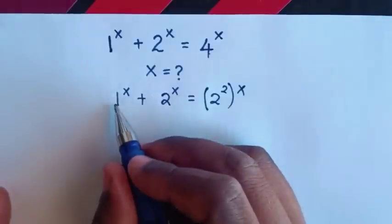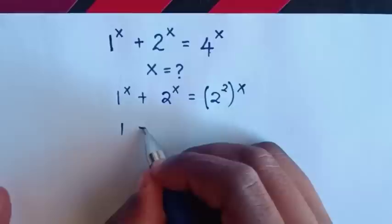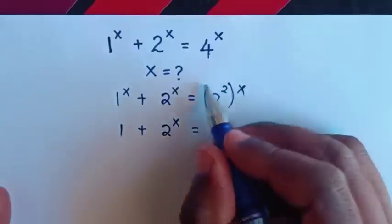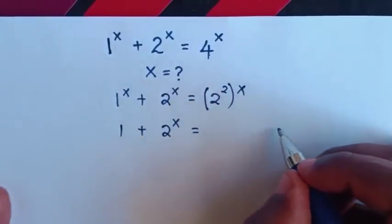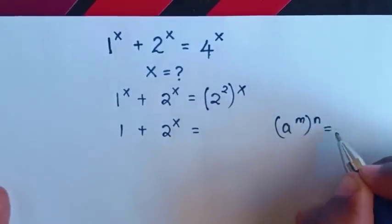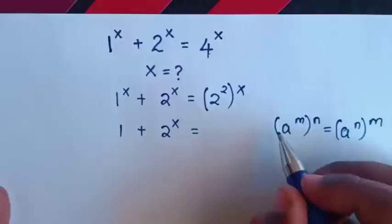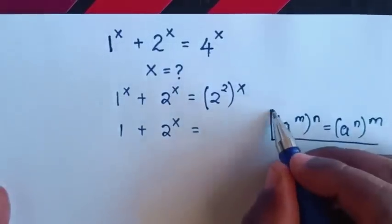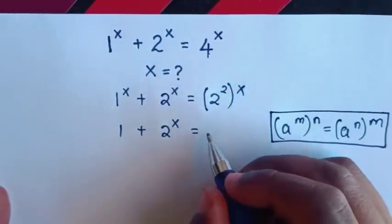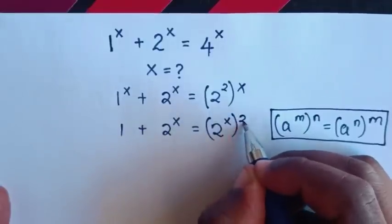Now, 1 power any number is 1, so here it will be 1 plus 2 power x is equal to... We will apply the exponential rule, which is a power m, bracket power n, is equal to a power n, bracket power m. Then we exchange the powers inside the bracket, so it will be 2 power x, bracket power 2.